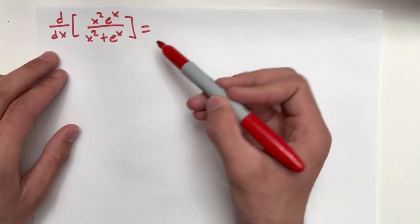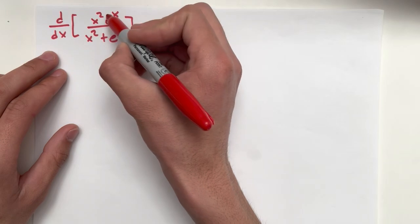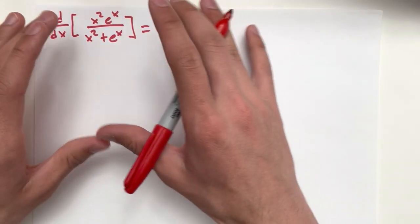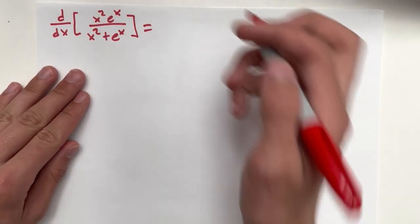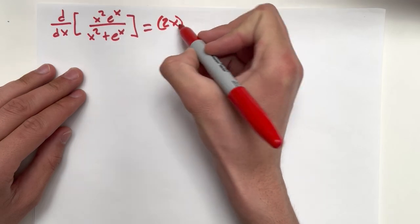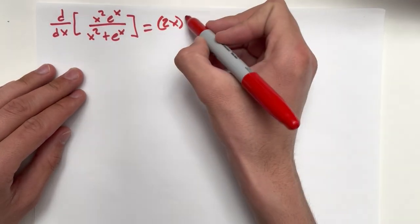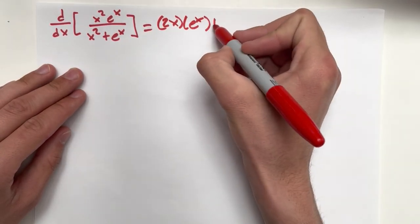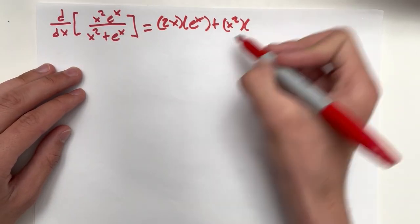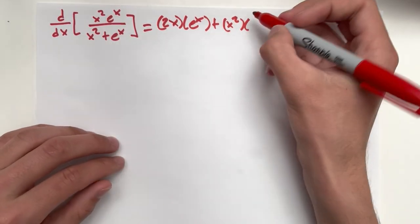So the derivative of the numerator, we're going to see that x squared times e to the x, that's actually a whole like two functions right there. So we need to use the product rule for that. So the derivative of that first term is going to be 2x times e to the x plus the first term untouched times the derivative of the second term, which is e to the x.